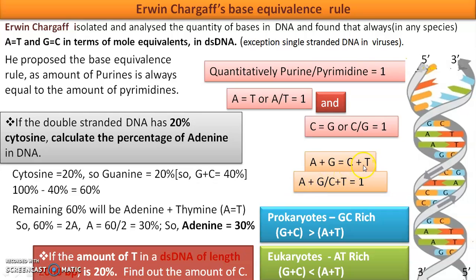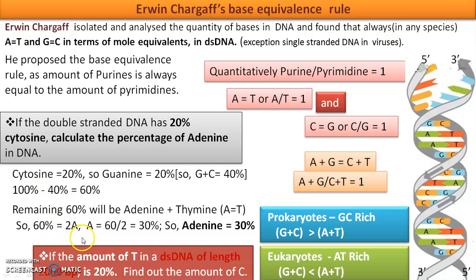We will discuss in a future video why thymine is in DNA and uracil is in RNA. These formulae can be used to solve many types of questions. For example: given a double-stranded DNA where cytosine is 20%, calculate the percentage of adenine. Since C = G, guanine is also 20%, giving C + G = 40%. The remaining 60% is A + T. Since A = T, that is 2A = 60%, so A = 30%.